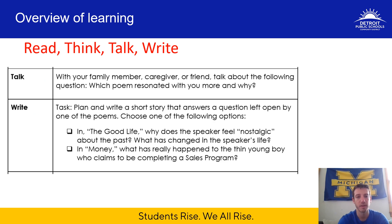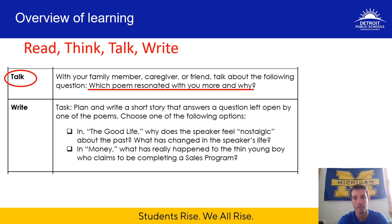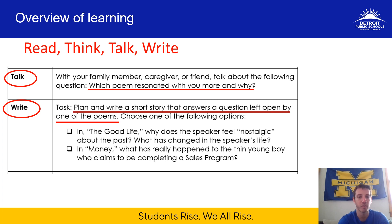The talk section today is like it normally is — you have to talk with a family member, caregiver, or friend about this specific question: Which poem resonated with you more and why? It could be because one poem was more interesting or more connected to your life. Totally up to you to decide. For the writing section, you're going to plan and write a short story that answers a question left open by one of the poems. Choose one of the following options — you don't have to do both, just choose one.